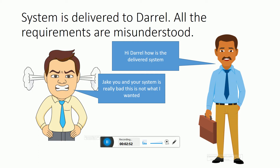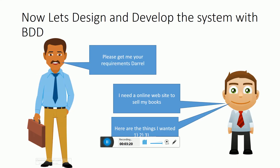Darrell becomes angry. He has invested all his money but the system is completely wrong. Jake asks how the system is, and Darrell says a completely wrong system was delivered. Darrell feels disappointed. So how can we change this way of developing systems? Let's design and develop a system with behavior driven development.